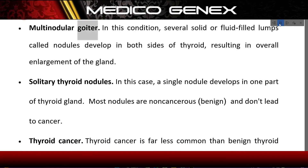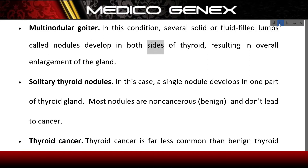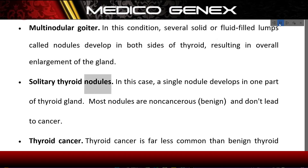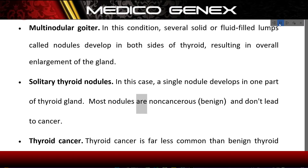Multinodular goiter: In this condition, several solid or fluid-filled lumps called nodules develop in both sides of the thyroid, resulting in overall enlargement of the gland. Solitary thyroid nodules: In this case, a single nodule develops in one part of the thyroid gland. Most nodules are non-cancerous (benign) and don't lead to cancer.